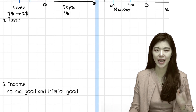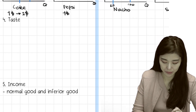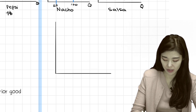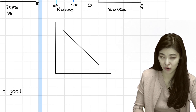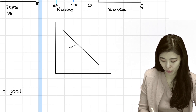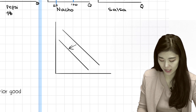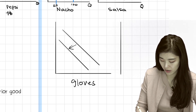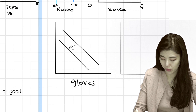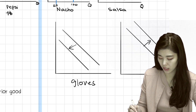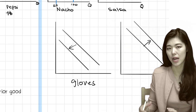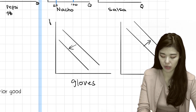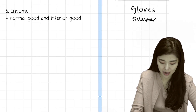Taste. Demand for gloves, for example — in the summer, demand for gloves will probably decrease, so it will shift to the left. And in the winter, demand for gloves will increase because people demand more gloves when it's cold. Remember to label them all.